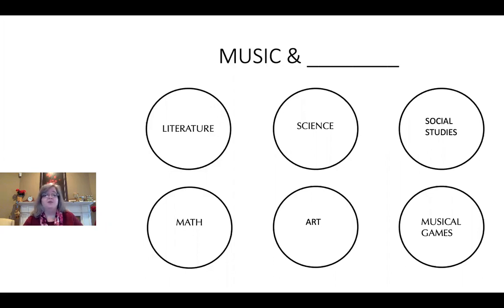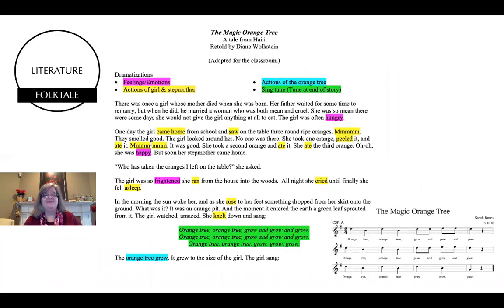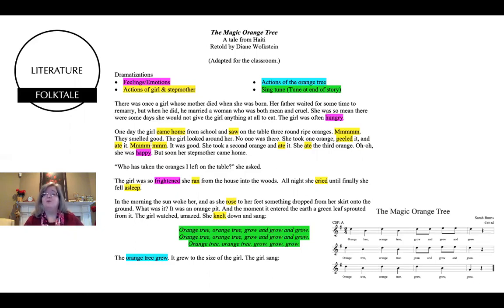First, we look at folk tales. Here I have an excerpt from a folk tale from Haiti, The Magic Orange Tree, and I would look at the folk tale and find things in it that I can make musical or that the students might be able to dramatize. This folk tale happens to have a song in it, so I wrote a simple tune to go along with it.